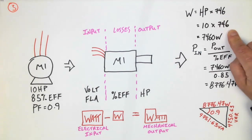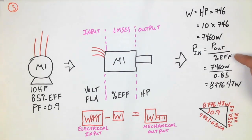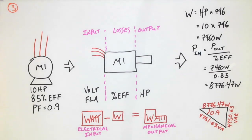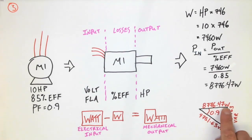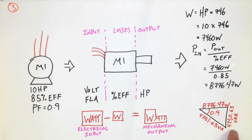For the 10-horsepower motor, we multiply 10 by 746, which gives us 7,460 watts output — that is the output power at the shaft. Using the percent efficiency formula, power input equals power output divided by percent efficiency, so 7,460 divided by 0.85 equals 8,776.47 watts input. We then use the power factor given in the question: watts divided by power factor gives total VA. I use Pythagoras to get the VAR value.